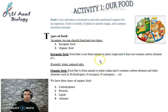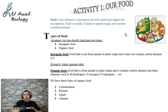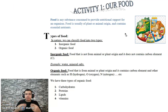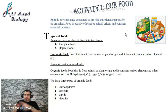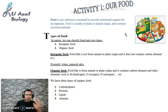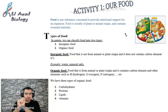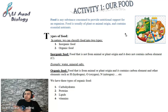Now let's start with this chapter. Activity one: Our Food. What do you mean by food? If I want to define food — anything that we eat. It has two sources: either animal or plant, from the habitat. Food gives us energy and food builds up our bodies.